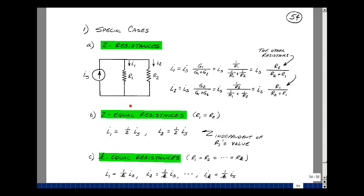Now, just using the current divider rule, the current I1 is going to be G1 over G1 plus G2 times I of S. Likewise, for I2, G2 over G1 plus G2 times I of S.